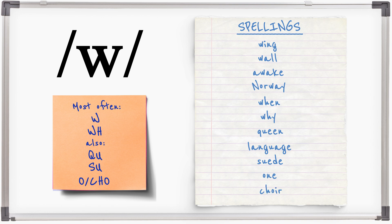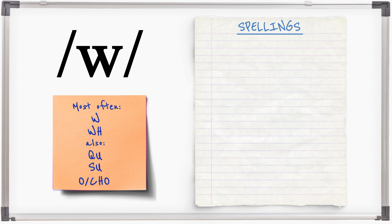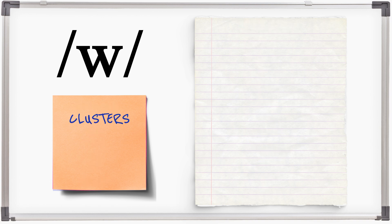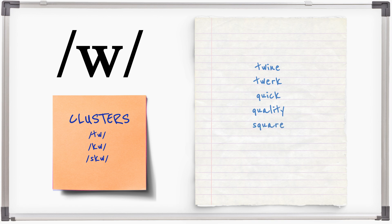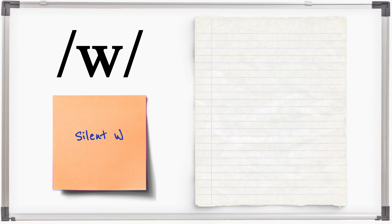And choir. W appears in some clusters: twine, twerk, quick, quality, square, squeal.